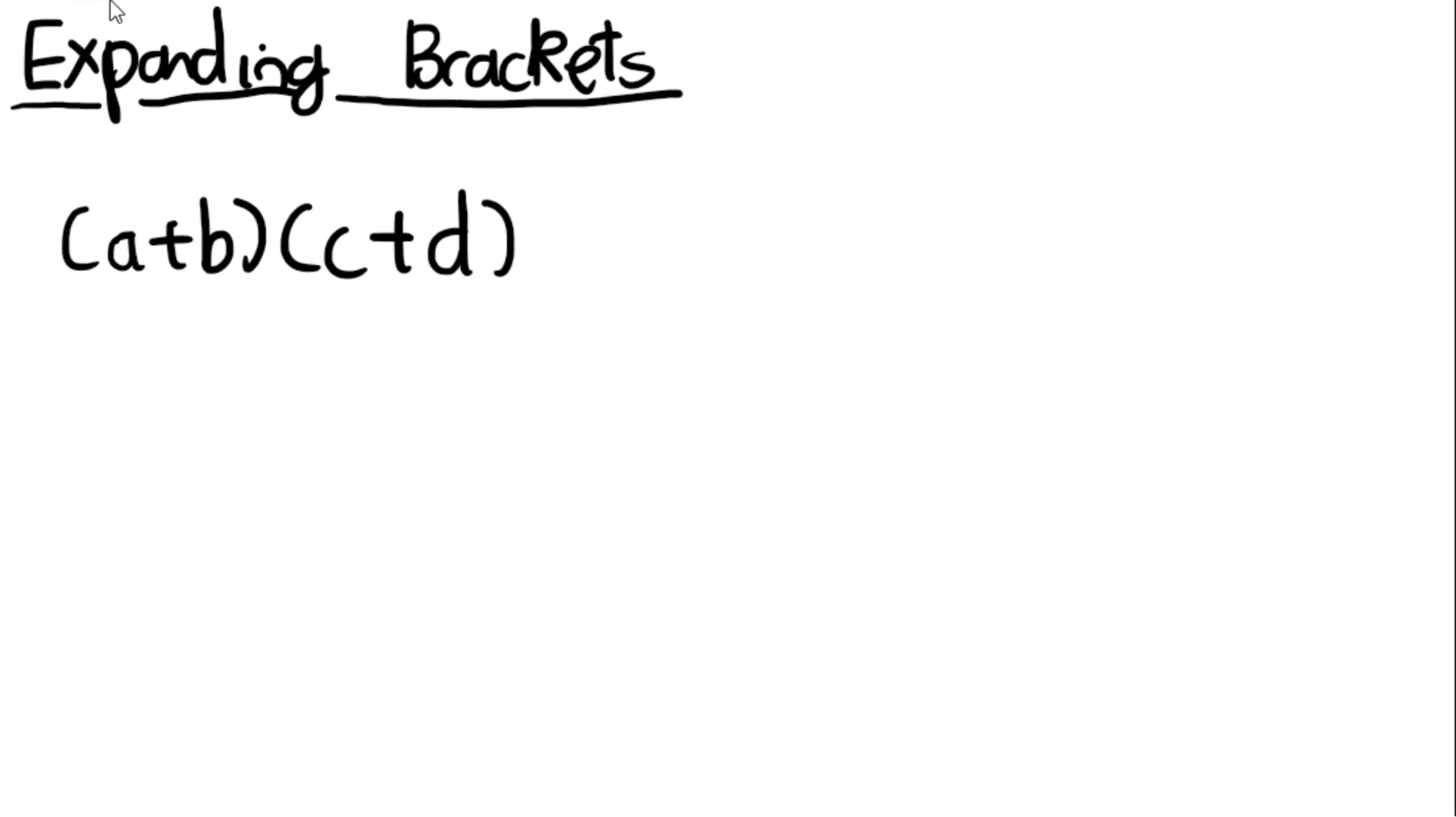So the important thing to expand brackets is to multiply every term in each bracket together. So the best way to represent this is with a, you need to times it by c and d, and with b, you need to times it by c and d. You need to times everything in each bracket together. So the best way to start off with this is to do it like this, and then draw the arrows here as well, and then follow the arrows, and that's all the multiplication that you need to do.